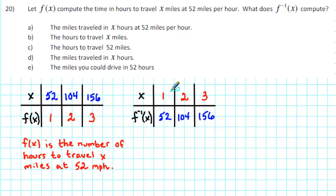Now, notice in our table for f inverse that 52 is the number of miles traveled in 1 hour at 52 miles per hour. 104 is the number of miles traveled in 2 hours at 52 miles per hour. And 156 is the number of miles traveled in 3 hours at 52 miles per hour.